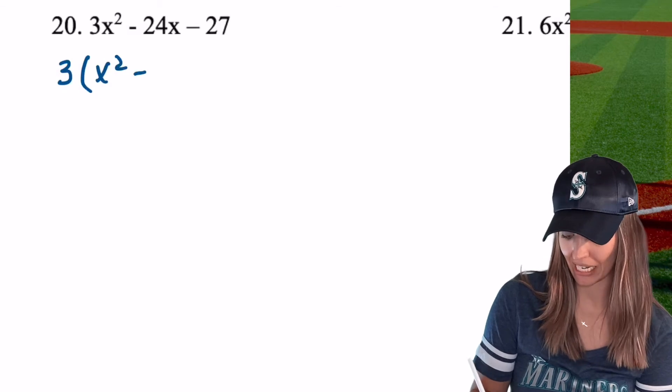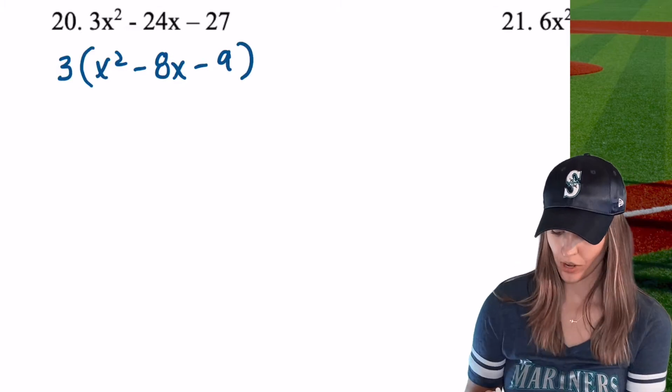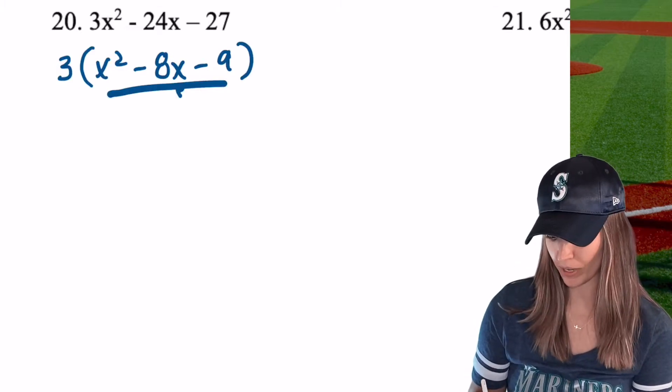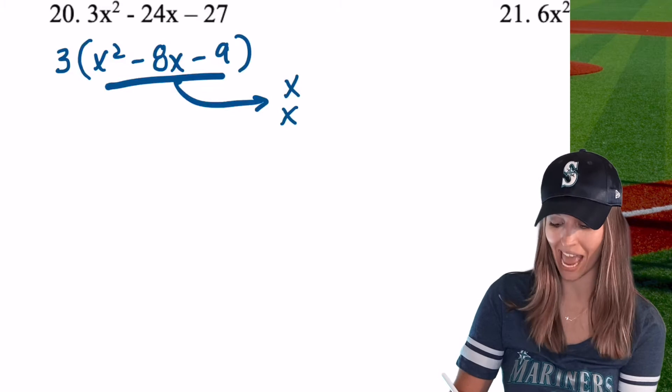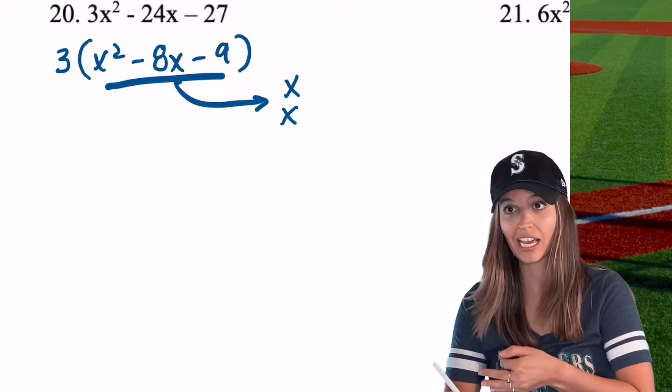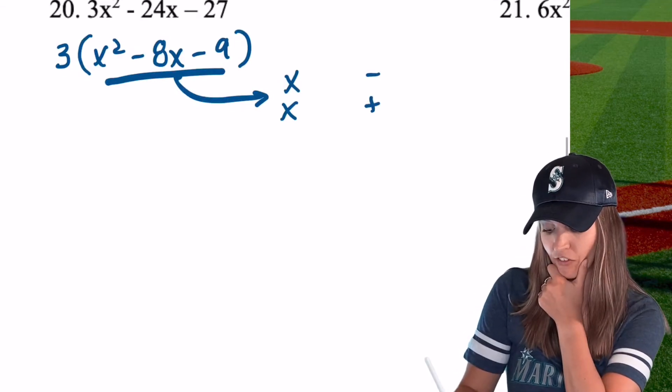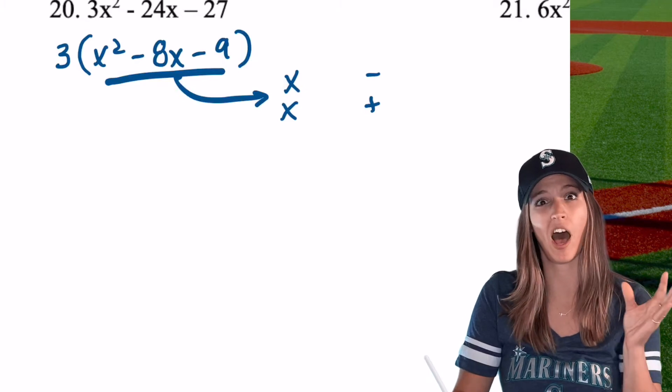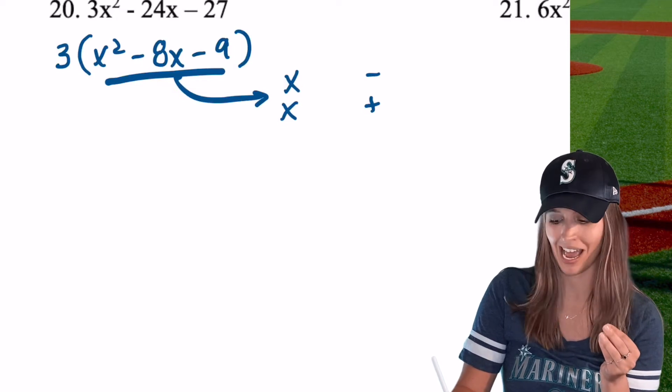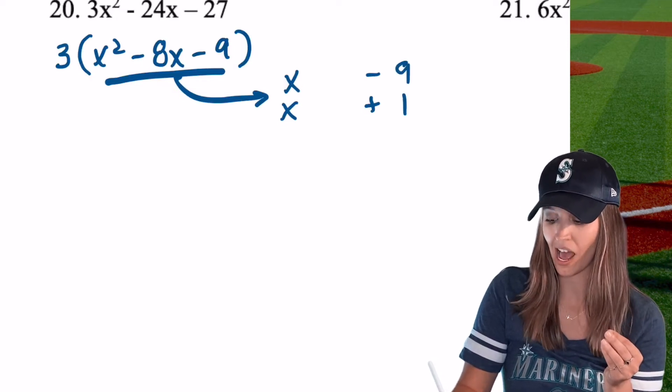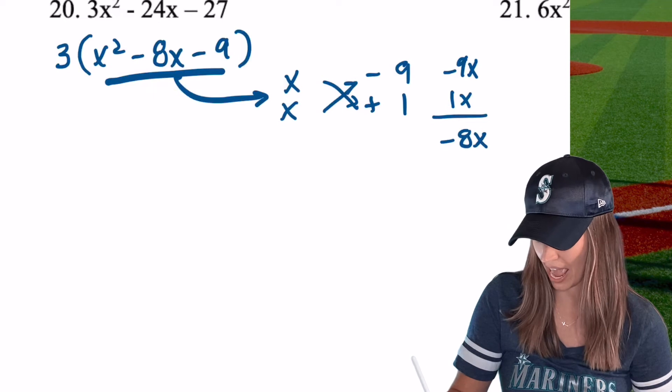So if I pull out the greatest common factor, 3x squared minus 24 divided by 3 is 8x minus 27 divided by 3 is 9. So now that I've pulled the GCF out, I can take this trinomial and factor that. So let's go off to the side and do that. x squared would be x and x, then multiplies to negative 9 adds to negative 8. So I want to end with a negative and have a negative as my middle term. So one of mine, I'm going to have to use a negative and a positive, and I want the middle term to be negative. So I'm going to want the highest product to be negative.